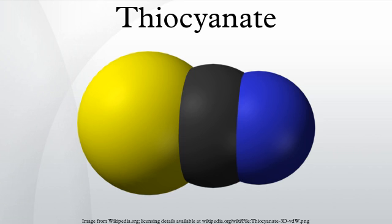In coordination chemistry, thiocyanate shares its negative charge approximately equally between sulfur and nitrogen. As a consequence, thiocyanate can act as a nucleophile at either sulfur or nitrogen; it is an ambidentate ligand. SCN can also bridge two or even three metals.